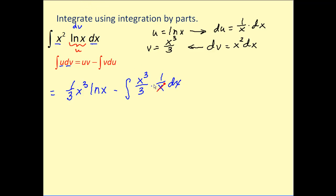Okay we can clean this up. One factor of x will simplify out and we can also factor out one-third. So let's rewrite this as minus one-third times the integral of x squared dx. And this is good news we can easily integrate this.